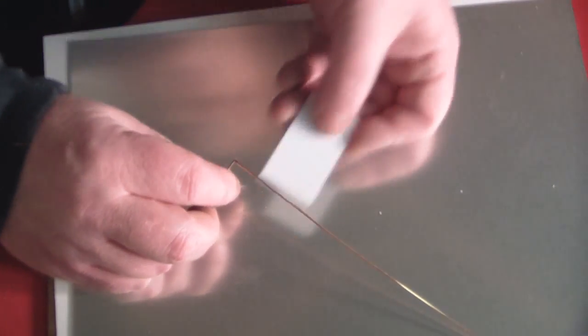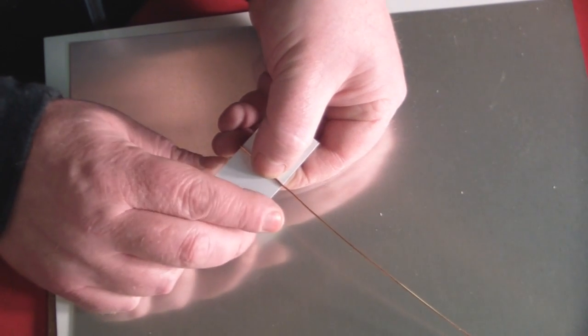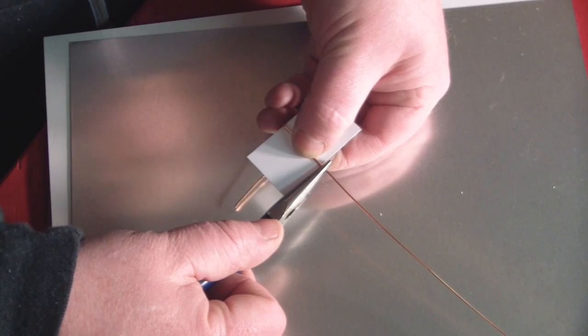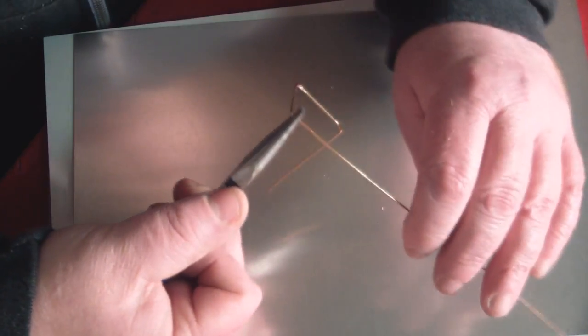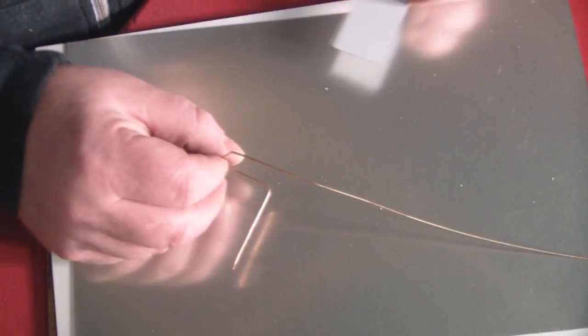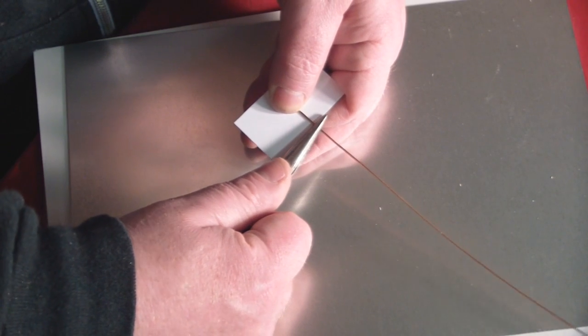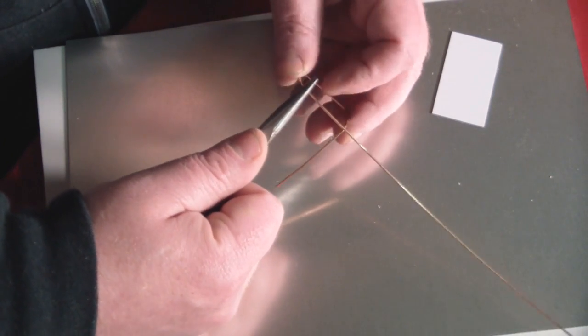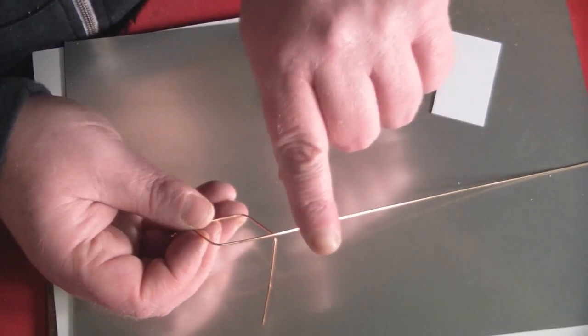So for the second bend, take my little piece of plastic card, put it up against that last bend like that. And take my needle nose pliers, get them up against there. Put the card away. Put a bend in like so. Now the next bend is going to be bending up that way.